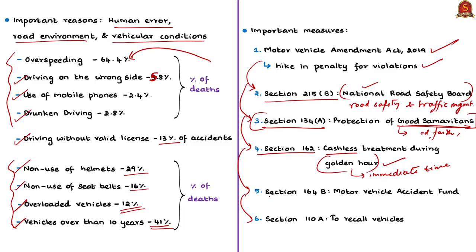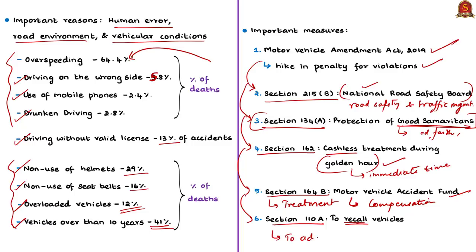Section 162 of the Act mentions that the central government shall make a scheme for cashless treatment of victims of the accident during the golden hour — the immediate time following a traumatic injury during which emergency treatment will be more successful — thereby saving more lives. Section 164B provides for the constitution of a Motor Vehicle Accident Fund, to be used for the treatment of injured persons and for compensation in hit-and-run cases. Section 110A directs the central government to recall motor vehicles of a particular type if a defect may cause harm to the environment, the driver, or the occupants. These provisions will help bring down casualty rates due to vehicle-related issues and improve road safety overall.